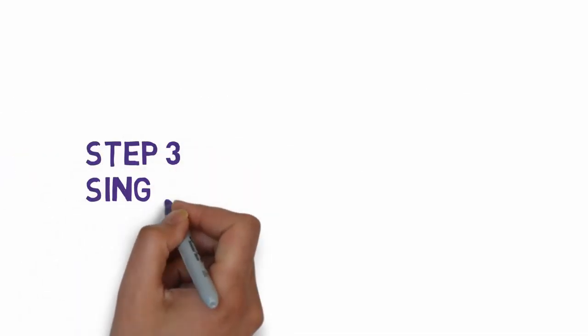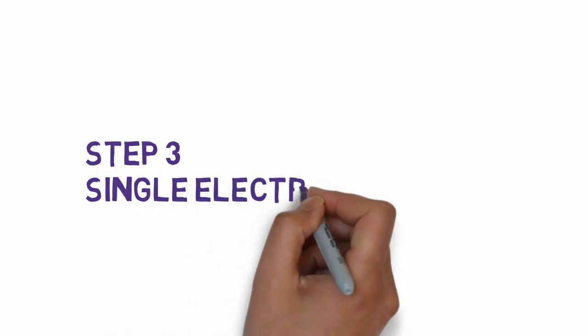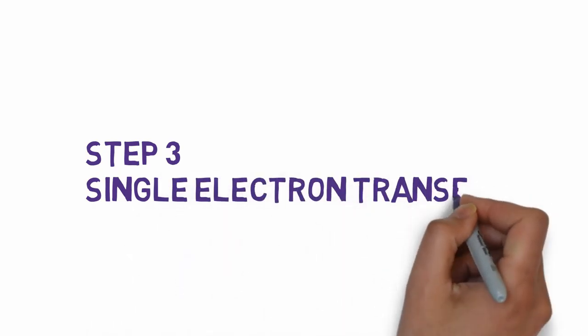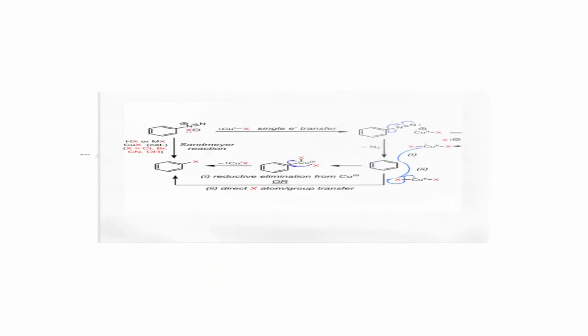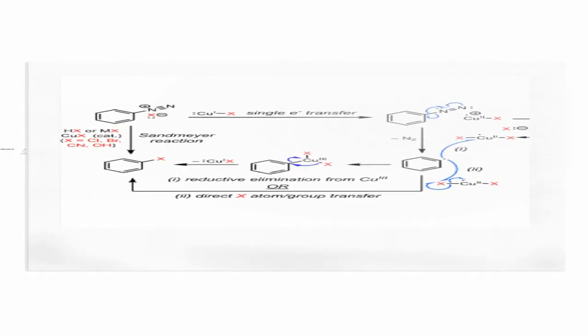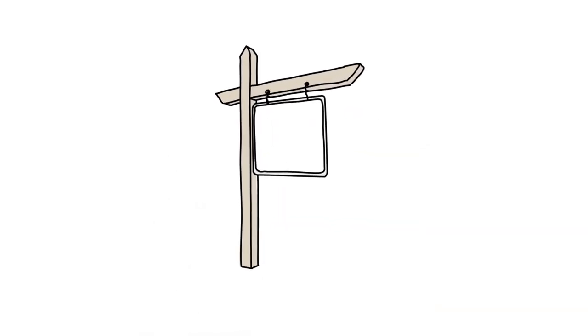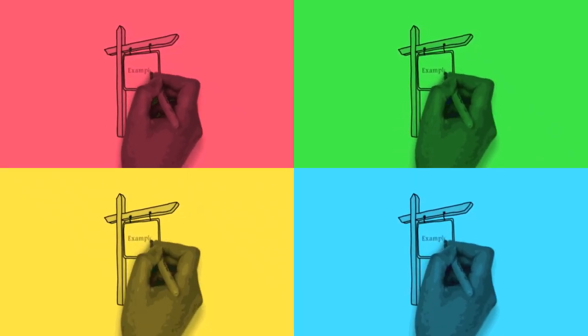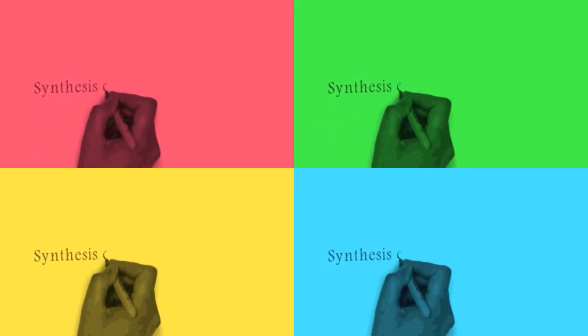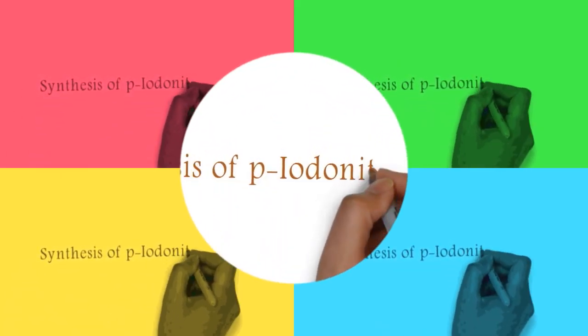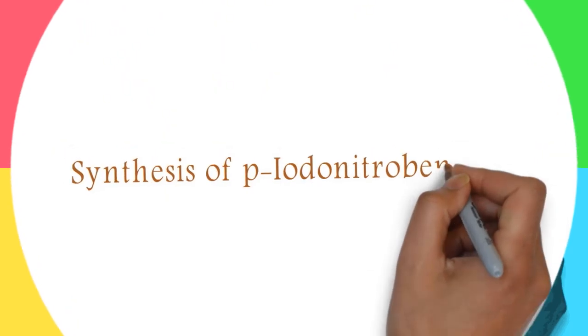Step 3: Single electron transfer. Step 4 example — synthesis of para-iodonitrobenzene.